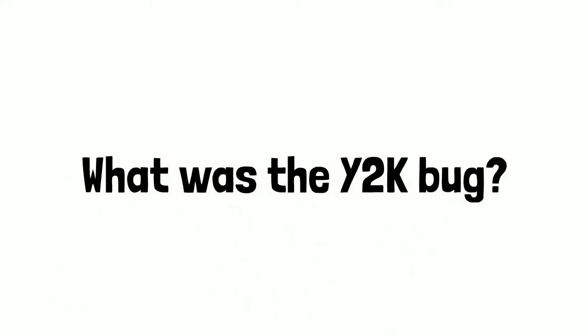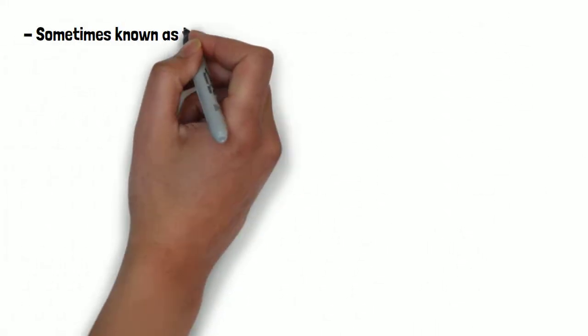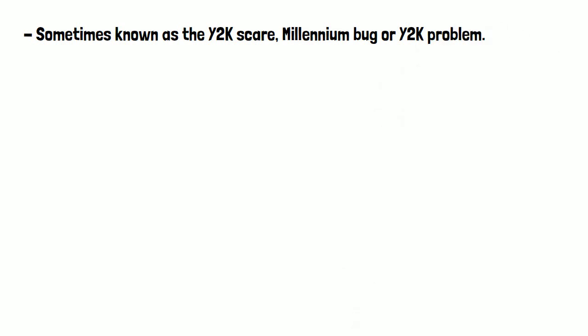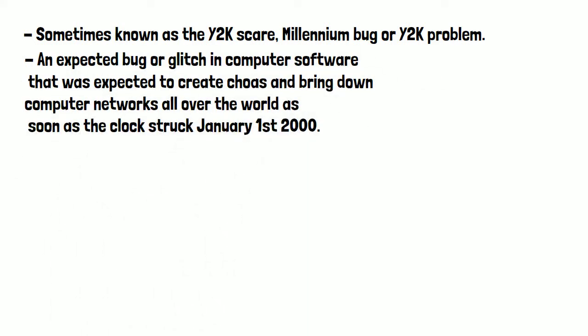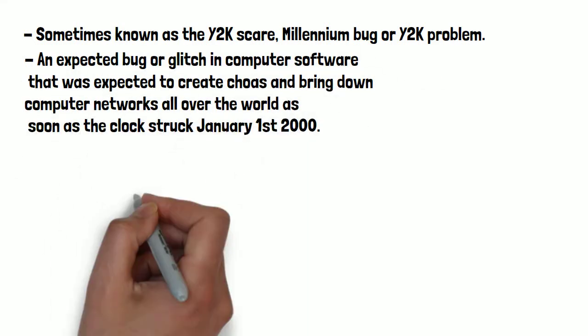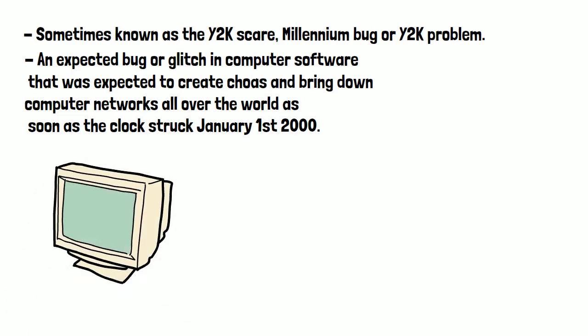What was the Y2K bug? Also sometimes known as the Y2K scare, millennium bug, or Y2K problem, this was an expected bug or glitch in computer software that was expected to create chaos and bring down computer networks all over the world as soon as the clock struck January 1st, 2000.